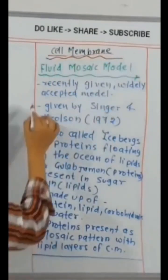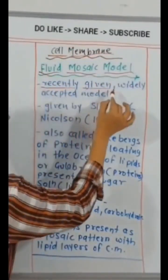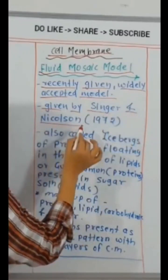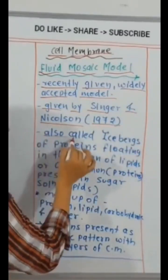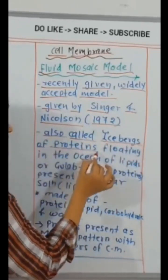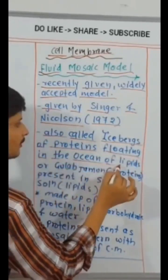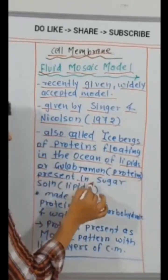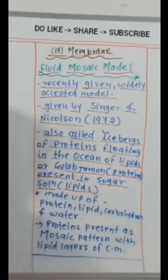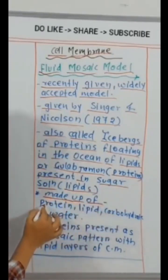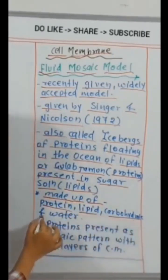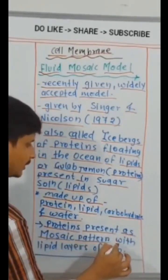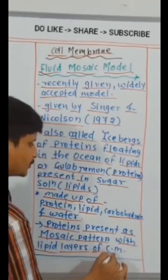Cell membrane, fluid mosaic model. Recently given widely accepted model, given by Singer and Nicholson, 1972. Also called Icebergs of Proteins floating in the Ocean of Lipids or Gulab Jamun, that is proteins present in sugar solution that is lipid. Cell membrane made up of protein, lipid, carbohydrate and water.